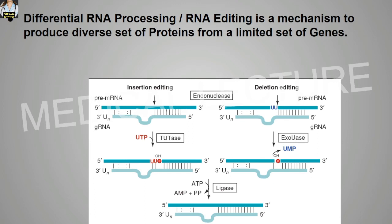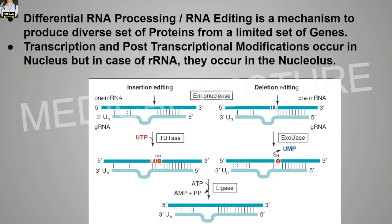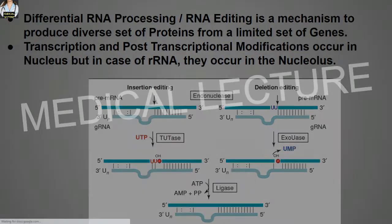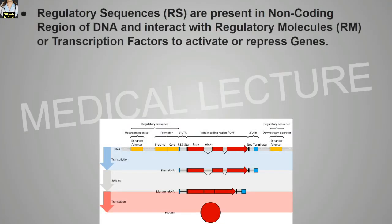Differential RNA processing, or RNA editing, is a mechanism to produce a diverse set of proteins from a limited set of genes. Transcription and post-transcriptional modification occur in the nucleus, but in the case of rRNA, they occur in the nucleolus. Regulatory sequences are present in the non-coding region of DNA and interact with regulatory molecules or transcription factors to activate or repress genes.